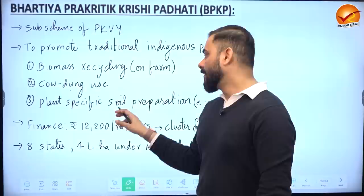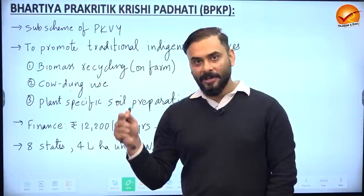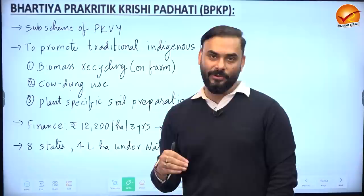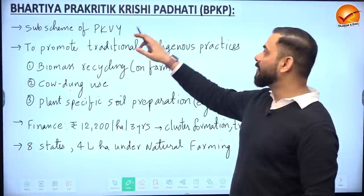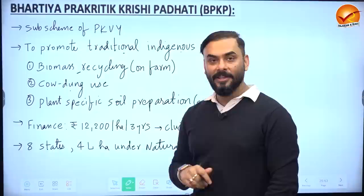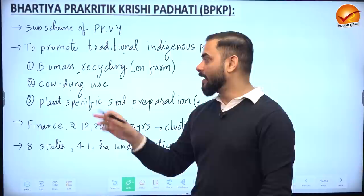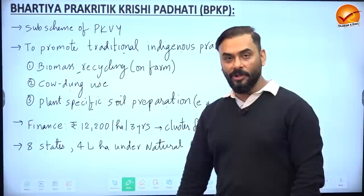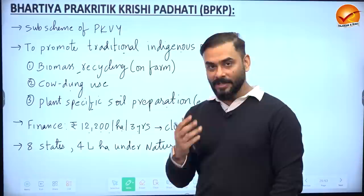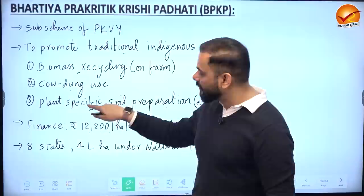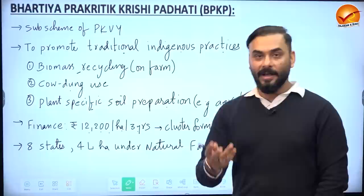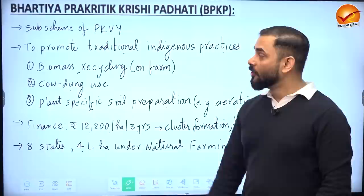BPKP also promotes basic soil management practices like tilling to improve oxygen entry into the soil. The key activities are: promoting traditional indigenous practices, biomass recycling using dead plant material, use of cow dung, and plant-specific soil preparation. For all three activities, the government provides 12,200 rupees per hectare for three years. Eight states — Andhra Pradesh, Jharkhand, Odisha, Kerala, and others — have brought four lakh hectares under natural farming.